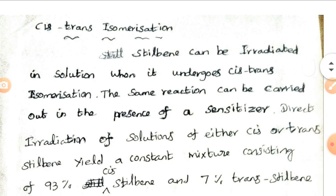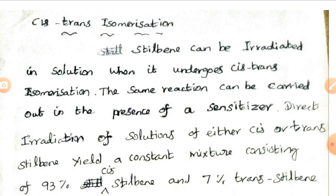Here we are considering stilbene as an example. We heard about stilbene in our previous classes. Stilbene can be irradiated in solution, when it undergoes cis-trans isomerization. Normally in cis-trans isomers, stilbene is a very good example.